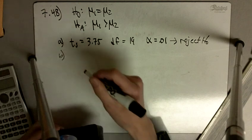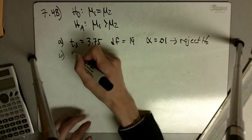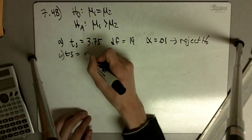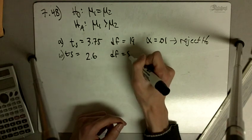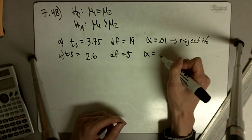Okay, part B asks us, our t-statistic is equal to 2.6, degrees of freedom is equal to 5, and alpha is equal to 0.10.